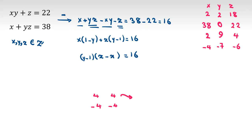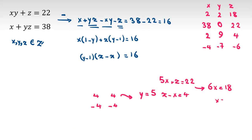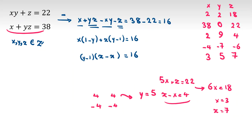Case (4, 4): y minus 1 = 4, so y = 5, z minus x = 4. Replacing y = 5: 5x + z = 22. Subtracting gives 6x = 18, so x = 3. Then z = x + 4 = 7. Checking: x·y + z = 15 + 7 = 22 ✓, x + y·z = 3 + 35 = 38 ✓. Valid: (3, 5, 7).